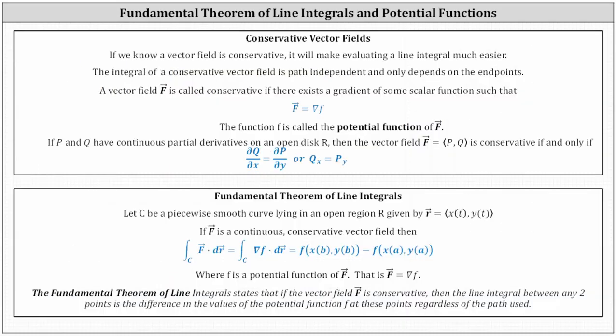For a quick review, if we know a vector field is conservative, it will make evaluating a line integral much easier. The integral of a conservative vector field is path independent and only depends on the endpoints. A vector field F is called conservative if there exists a gradient of some scalar function such that F equals the gradient of that function. The function is called the potential function of the vector field F.